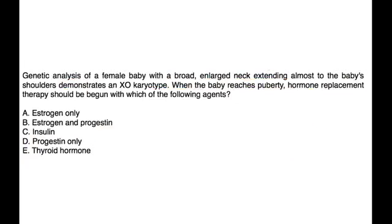Genetic analysis: a female baby with a broad, enlarged neck extending almost to the baby's shoulders demonstrates an XO karyotype. When she reaches puberty, hormone replacement therapy should be given to maintain secondary sexual characteristics.